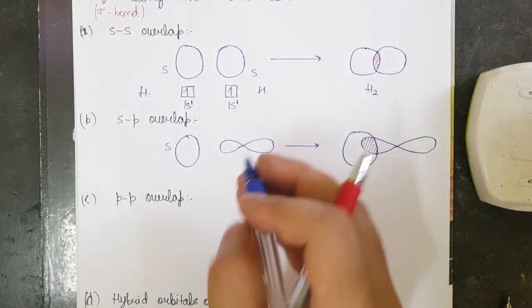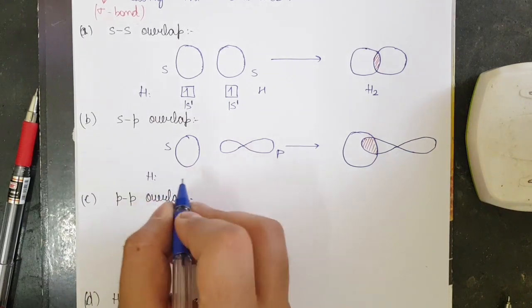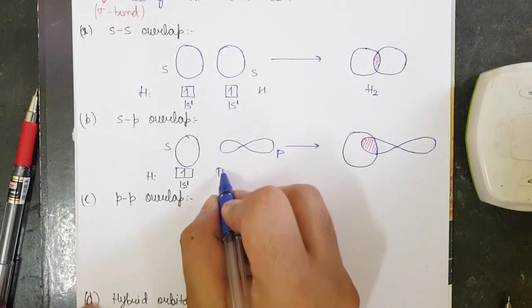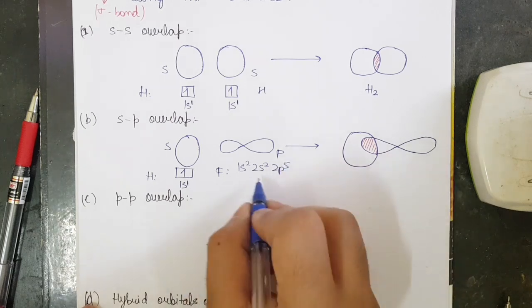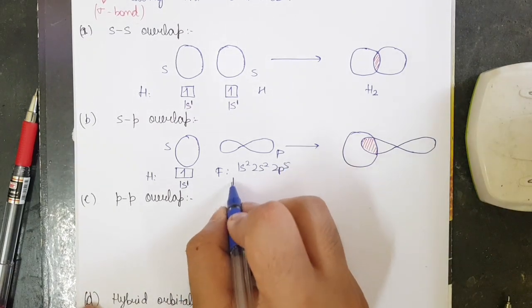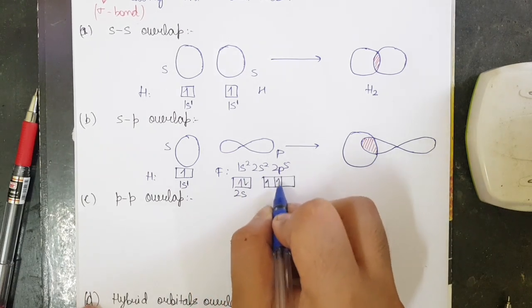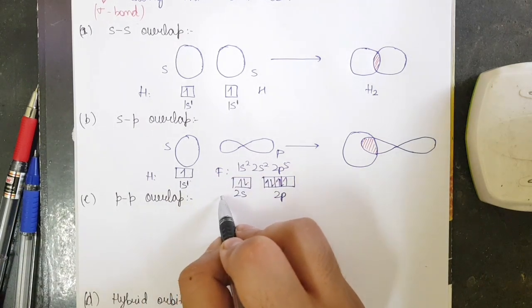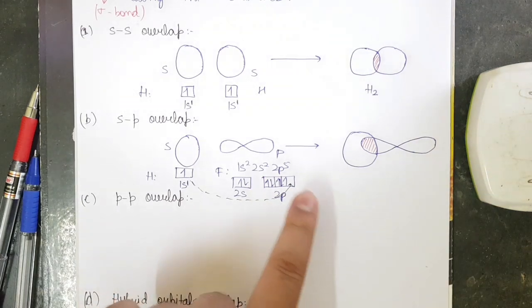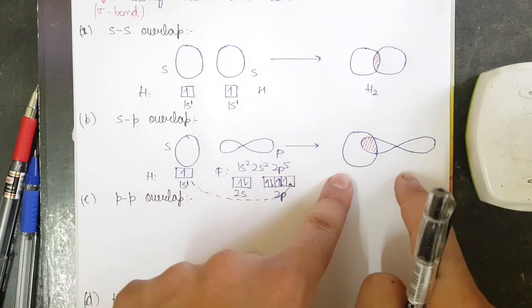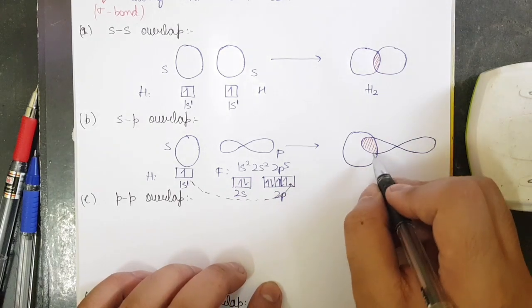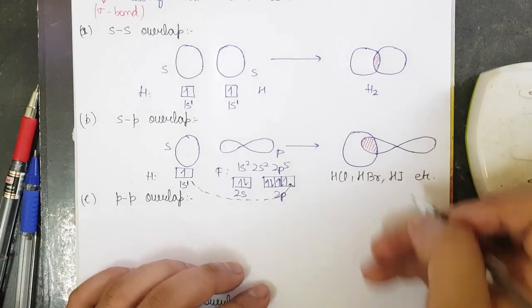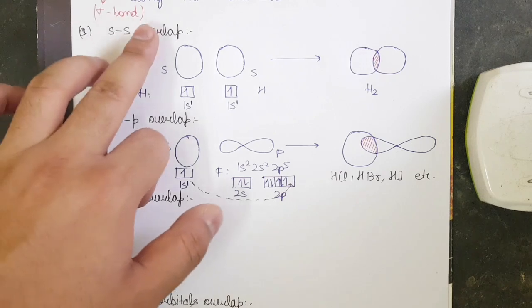For the example of SP overlap, I take hydrogen (1s1) for the S orbital. For the P orbital, a simple example is fluorine: 1s2, 2s2, 2p5. The valence shell is 2s2p where n=2. The 2s has 2 electrons and 2p has 5 electrons. The one electron from hydrogen's 1s will be shared with fluorine's 2p orbital — that is SP overlap, giving 2 electrons in the overlap. Other examples include HCl, HBr, HI. This SP overlap also gives the formation of a sigma bond.